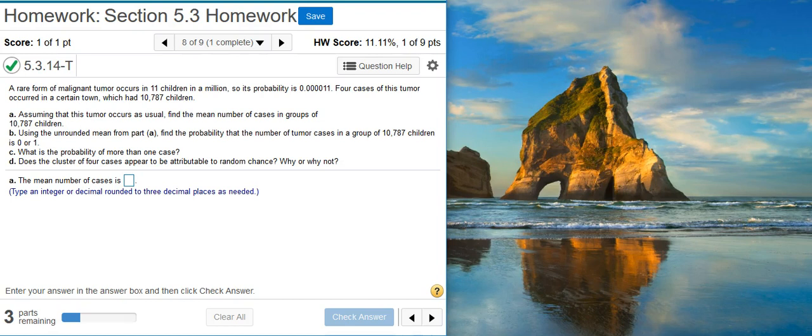Part A: Assuming that this tumor occurs as usual, find the mean number of cases in groups of 10,787 children. Part B: Using the unrounded mean from Part A, find the probability that the number of tumor cases in a group of 10,787 children is 0 or 1. Part C: What is the probability of more than one case? Part D: Does the cluster of four cases appear to be attributable to random chance? Why or why not?